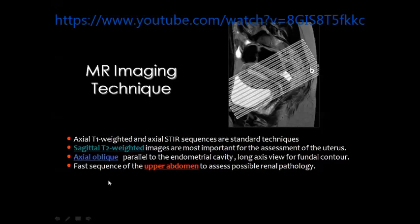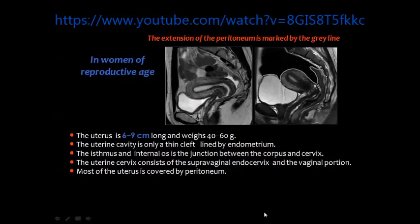Many radiologists will prefer axial oblique images obtained perpendicular to the axis of the uterine body. One important issue is that sometimes you need to scan the upper abdomen for possible renal pathology, especially in cases of uterine anomalies and in cases of malignancies searching for metastatic deposits.